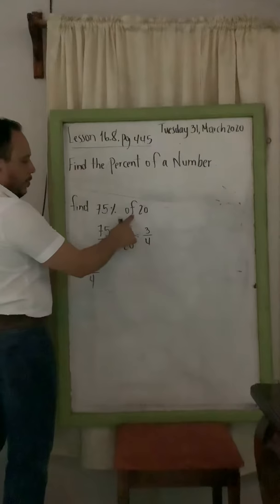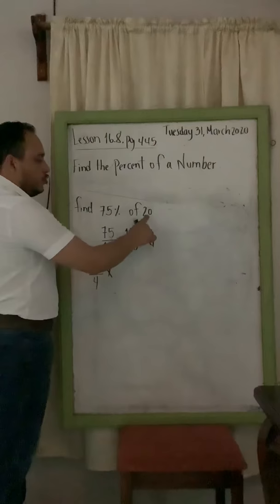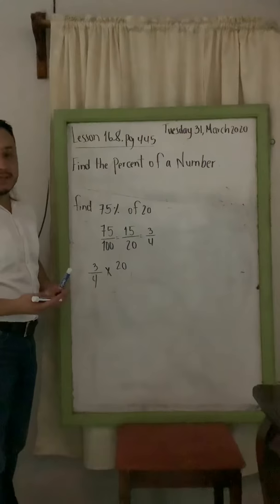you need to multiply that number. The word 'of' will count as multiplication. 20. Now you remember how to write a whole number as a fraction.